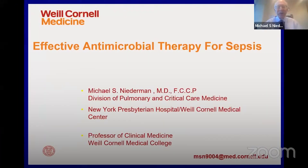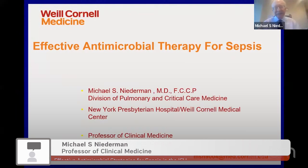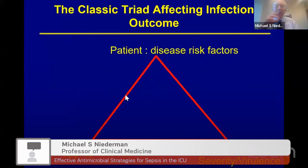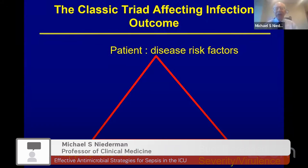My focus will be on a brief introduction of the topic of sepsis and some of the key principles for management. I want to start with a classic triad that determines the outcome in many infectious diseases, including sepsis: a balance between the patient, the organism, and the therapy. We must consider the patient's comorbidities and risk factors, the organism's virulence and dominance in a particular environment, and all of this leads to an appropriate choice of antibiotics, which in turn affects outcome.